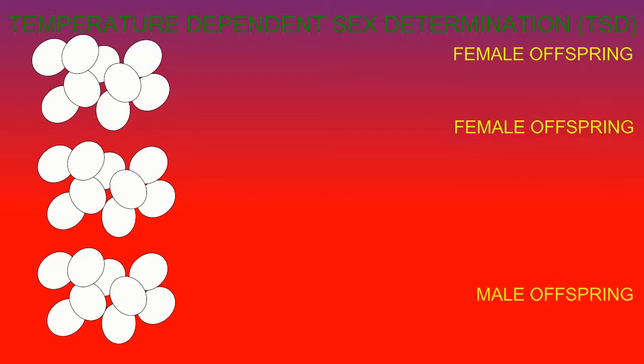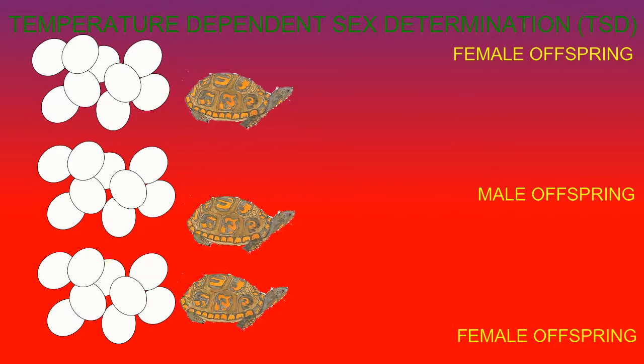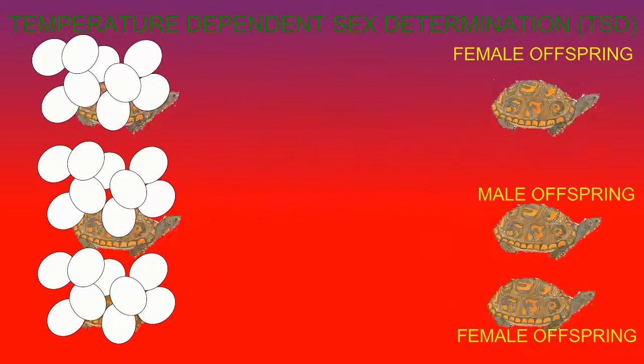In still another example, eggs which are warmed and cooled will both develop into female offspring, while intermediate temperatures will produce male offspring. Temperature-dependent sex determination is observed in all crocodilians, most turtles, and some lizards.